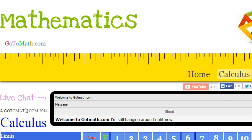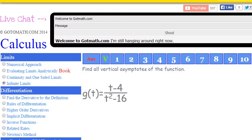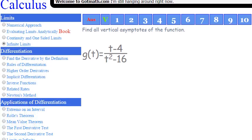Okay, we're at gotomath.com looking at calculus. We're actually in limits, infinite limits, and in this section right here. This is what we're going to be looking at: find all vertical asymptotes of the function g of t.